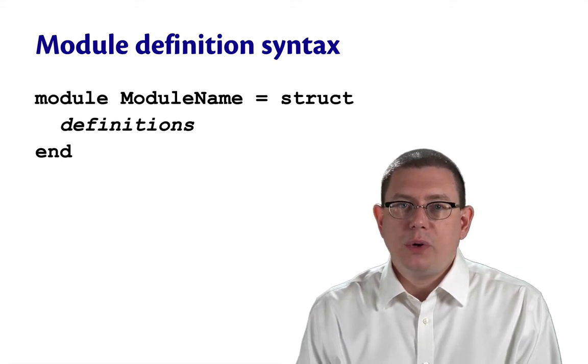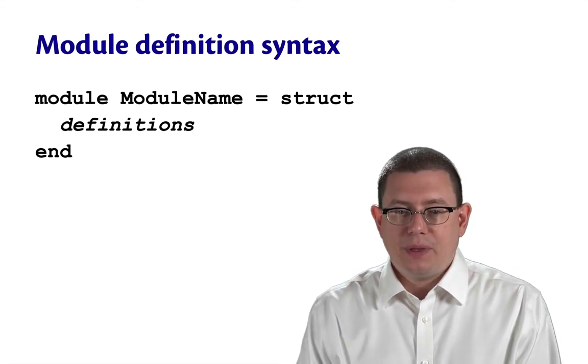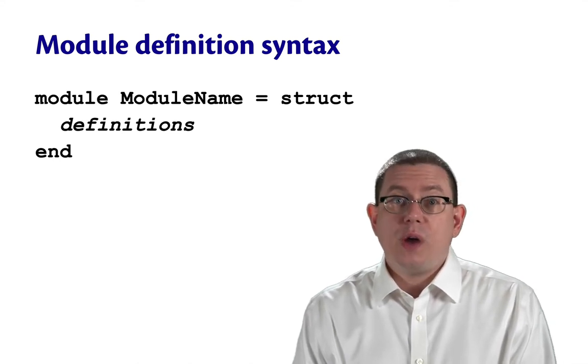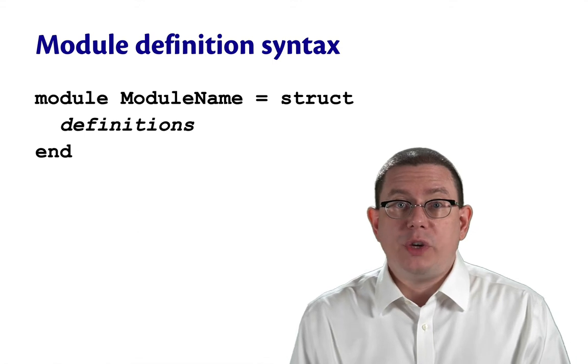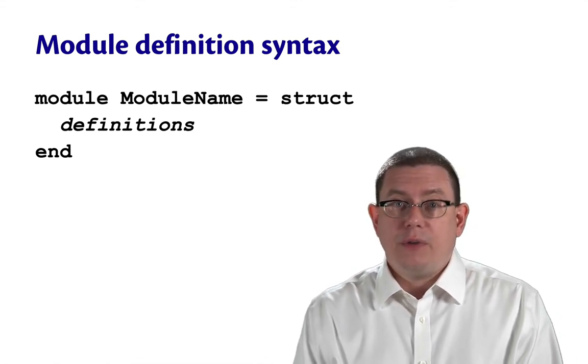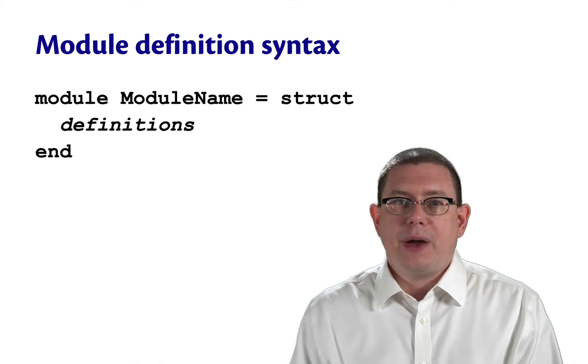So we write module and then the module name, and then we bind that to a module value. One way to construct the module value is with structures. So that's a struct keyword followed by a bunch of definitions, followed by the end keyword.